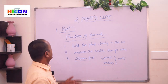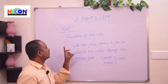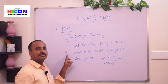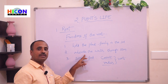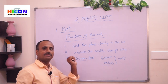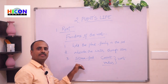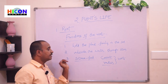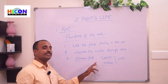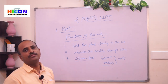These are the three functions of the roots. First: roots hold the plant firmly in the soil. Second: roots absorb water from the soil and supply it to all parts of the plant through the stem. Third: some roots store food — examples are carrot and radish, which are roots with food stored in them.